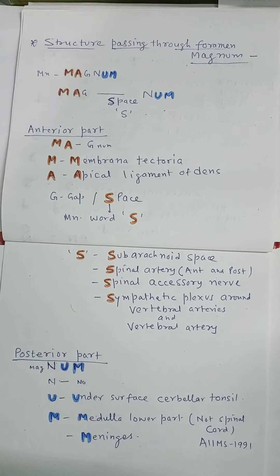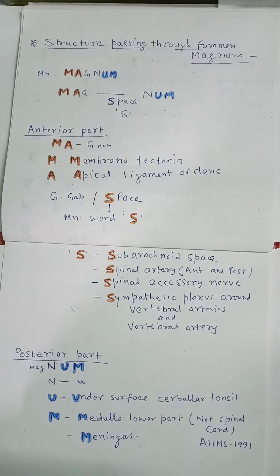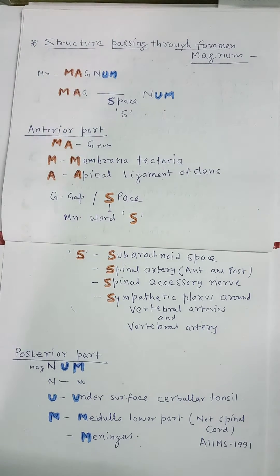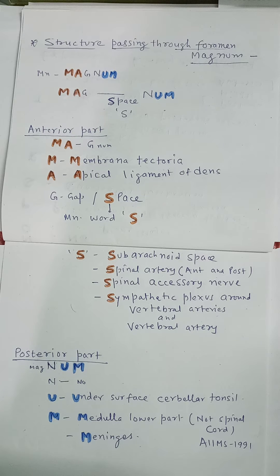Structures passing through the Foramen Magnum. The mnemonic word is MAGNUM. We can arrange the word MAGNUM as M-A-G — where G stands for gap or space — then N-U-M.